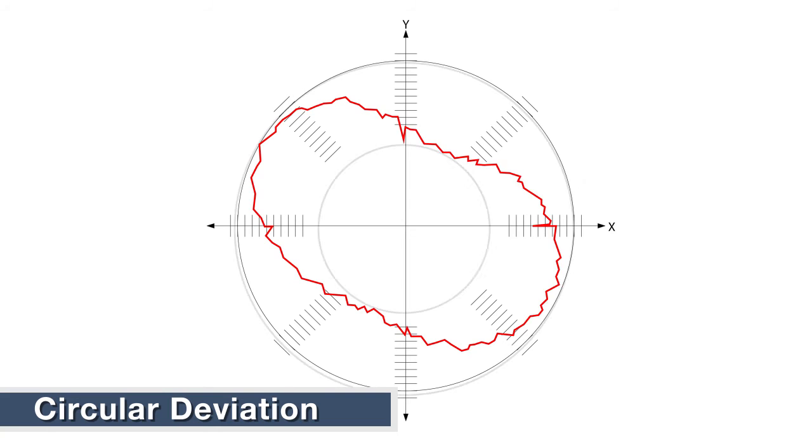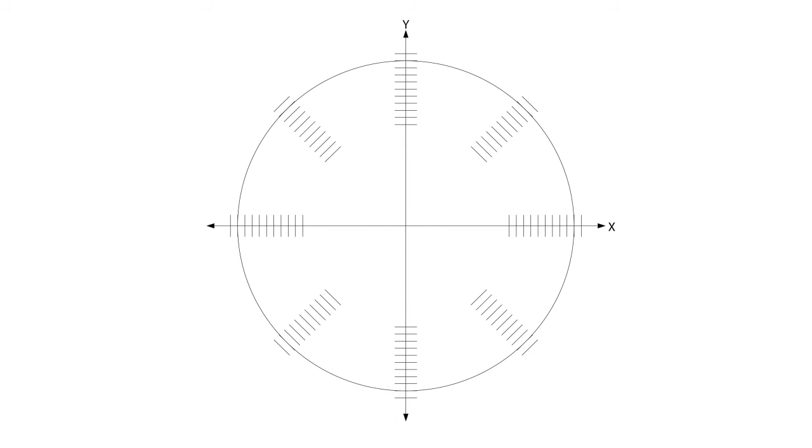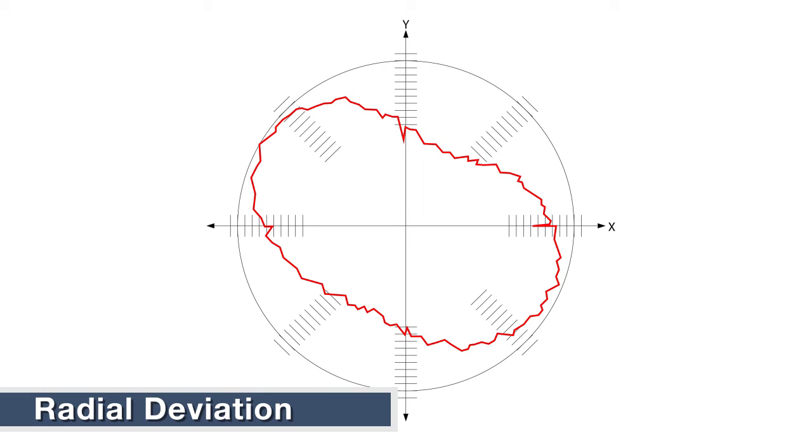Circular deviation is the error in the machine's overall performance, and radial error is the error in the overall accuracy of the machine.